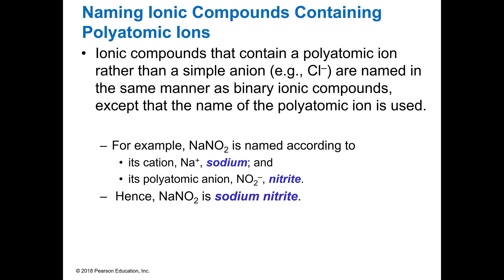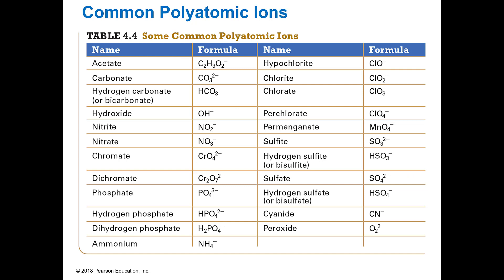Polyatomic ions just have specific names — nitrate, nitrite, those are their names and that's what you call them. So if you have Na and NO₂, that's sodium, and since nitrate is NO₃, this has one fewer oxygen, so it's nitrite — sodium nitrite. You'll be using your reference sheet on the test and it has most of them on there, along with their charges.